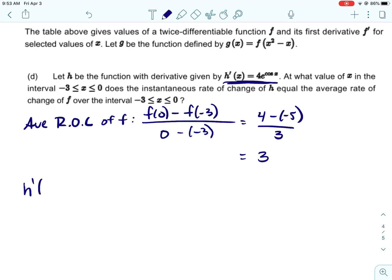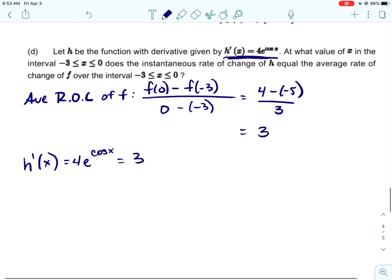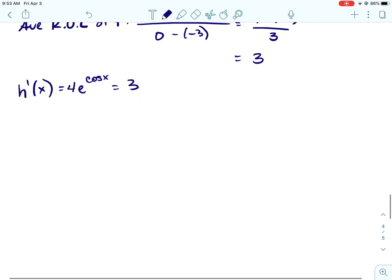Alright, so it looks like we're going to get 3 for h prime of... Oh, we want to figure out... Okay, sorry. They already gave us the derivative. So we want to figure out when that derivative, the instantaneous rate of change, is equal to 3.